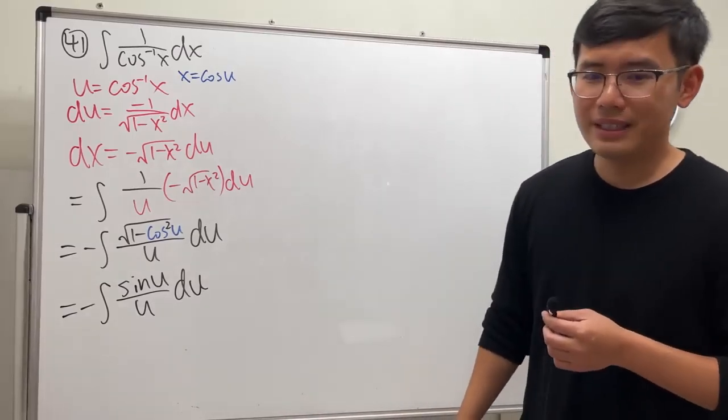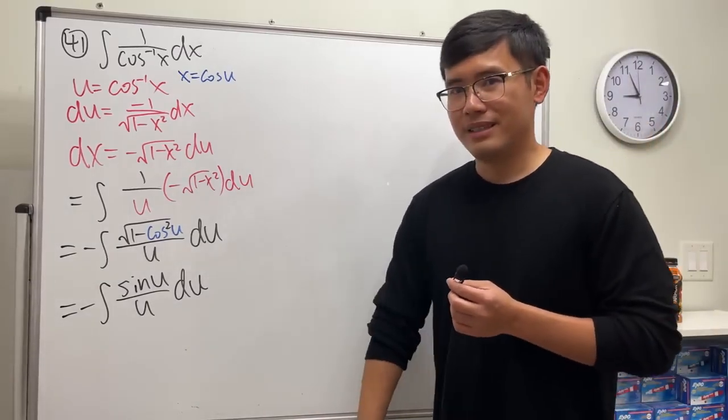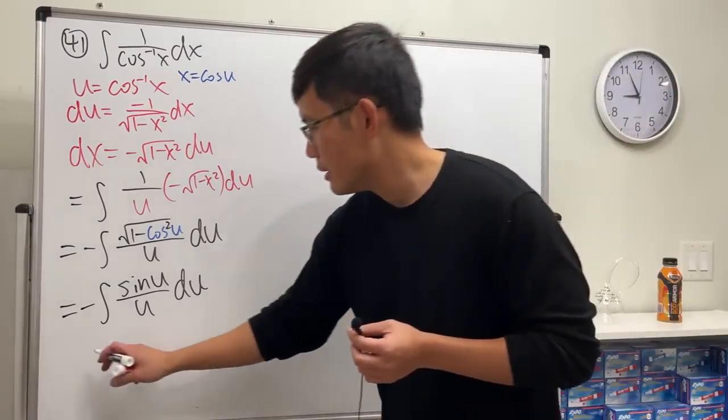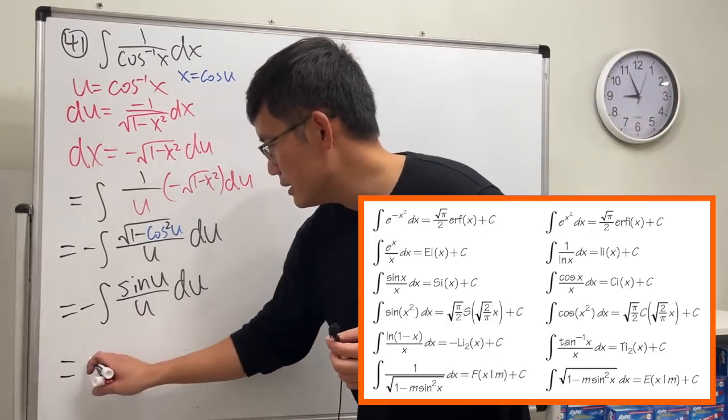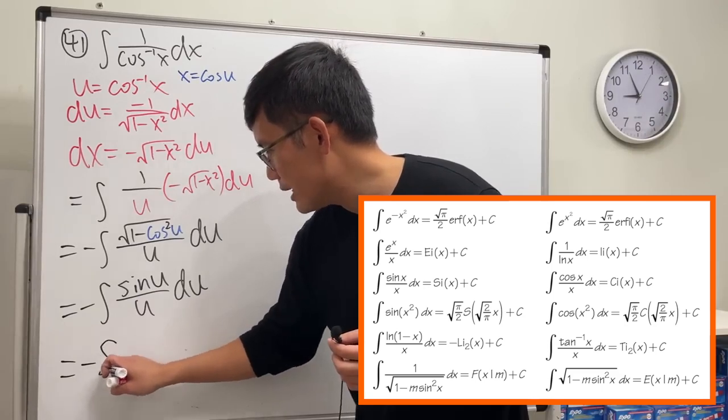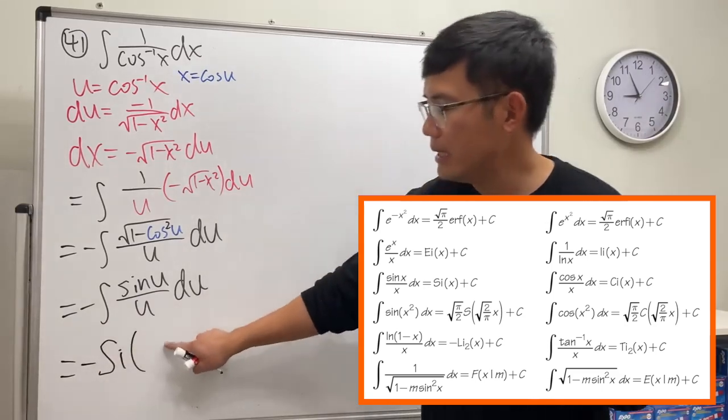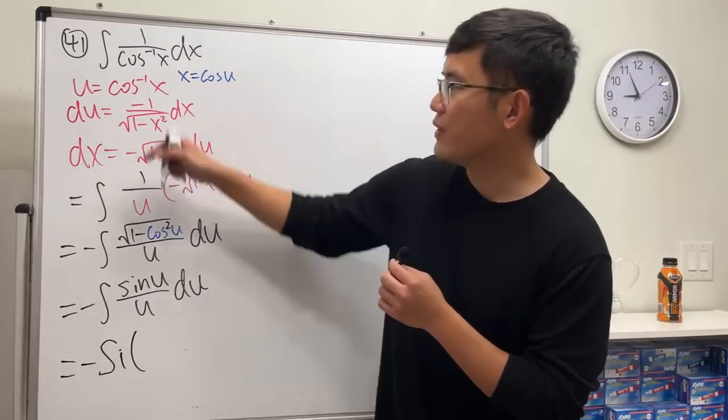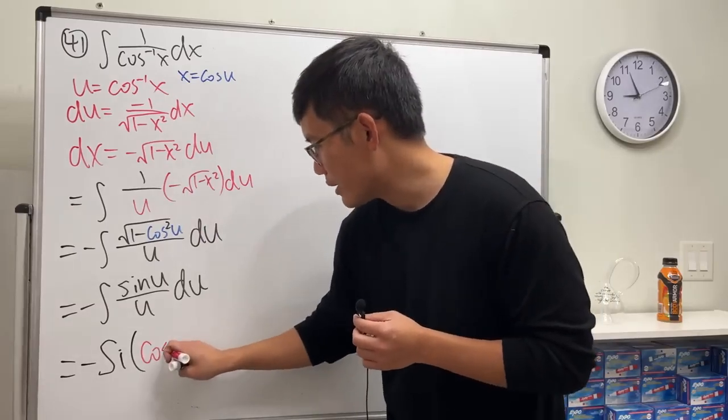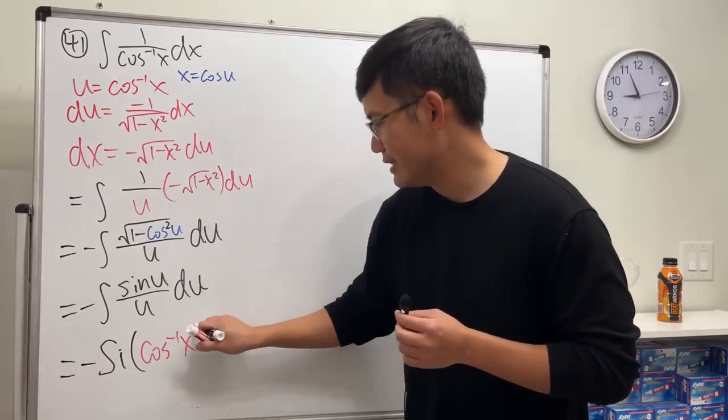We have never done it before, right? It's a special integral. This is called the sine integral. So the answer is just going to be negative, and then sine integral is just Si, and then of course the input is u. u is the inverse cosine, so we just write that down. It's like this.